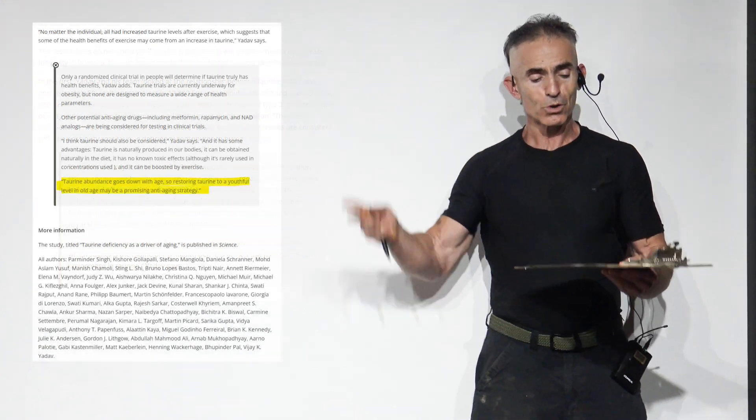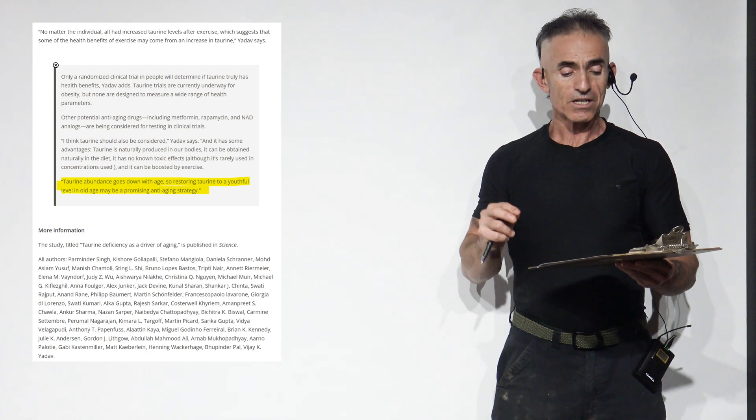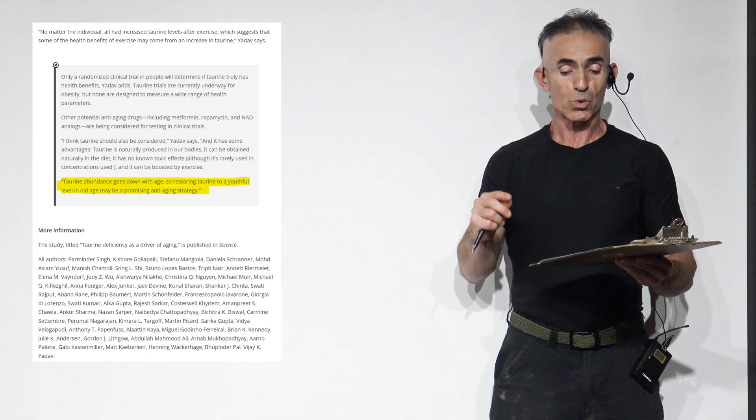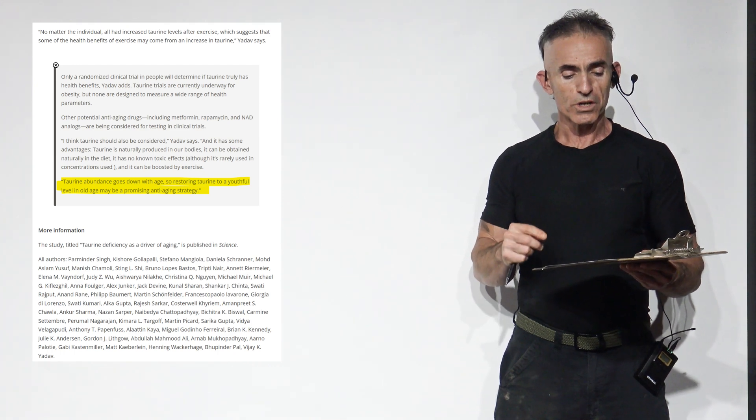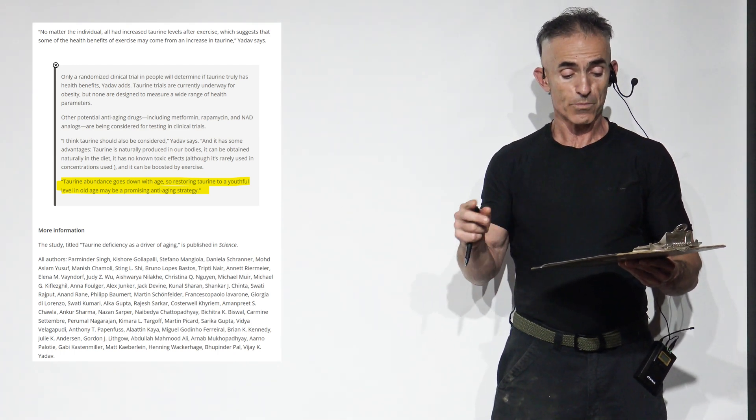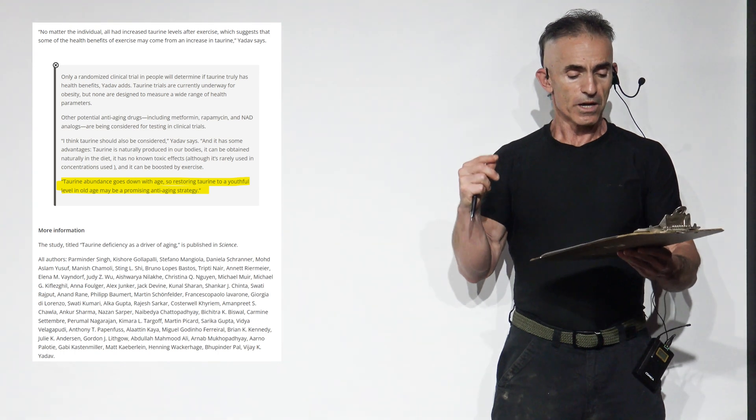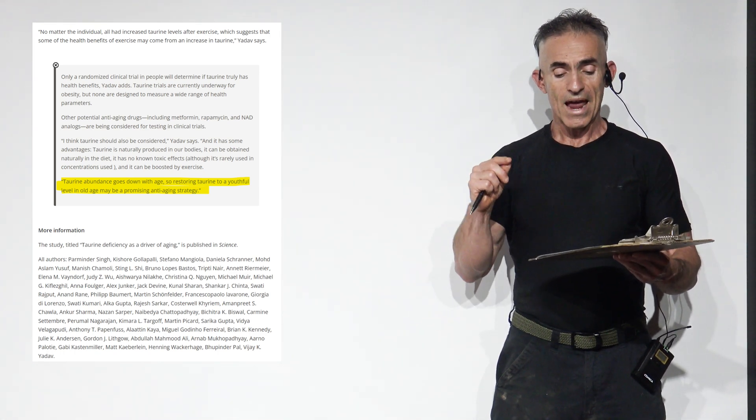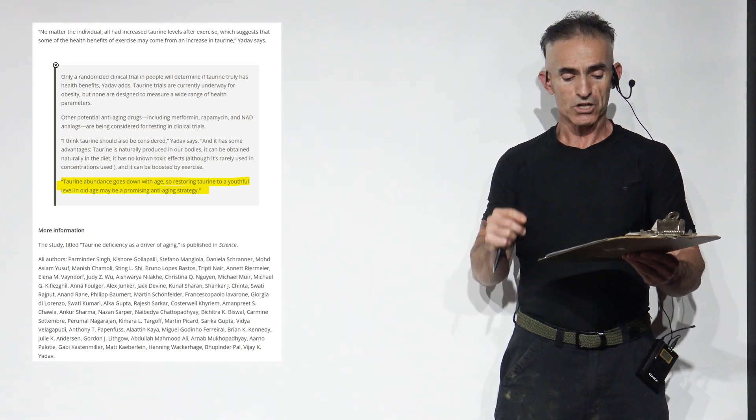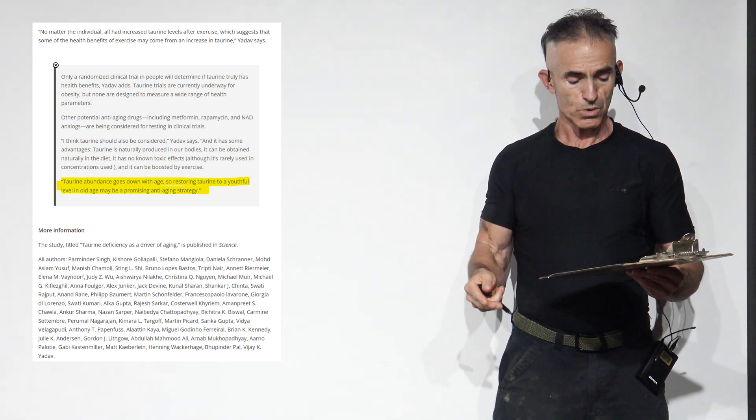Now we move to the conclusion. Only randomized clinical trials in people will determine if taurine truly has health benefits. Taurine trials are currently underway for obesity, but none are designed to measure a wide range of health parameters. Other potential anti-aging drugs, including metformin, rapamycin, and NAD analogs, are being considered for testing in clinical trials.